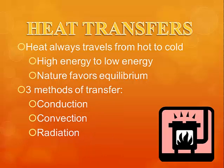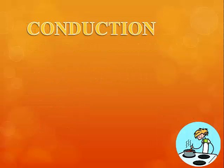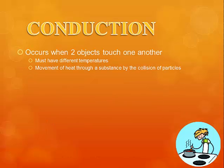Heat transfers in one of three ways: conduction, convection, and radiation. Conduction is probably the most common one. If you touch something, you are transferring heat through conduction. It occurs when two objects touch one another, and in order for heat to transfer through conduction, the two objects must have different temperatures — one must be higher than the other. Since heat always travels from hot to cold, it travels from the object of higher temperature to the object of lower temperature.